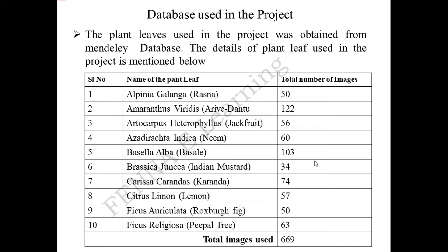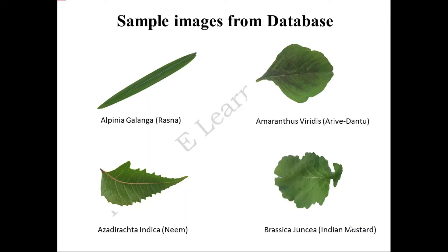This is the database used in the project. The plant leaves were obtained from the Mendeley database. The botanical names and normal names of the medicinal plant leaves along with the total number of images used are provided. The leaves include rasna, jackfruit, neem leaf, basale leaf, Indian mustard leaf, coranda leaf, lemon leaf, rocks burr, fig leaf, and purple tree leaf. In total, 669 images are used in the project. Sample images from the database are also shown.